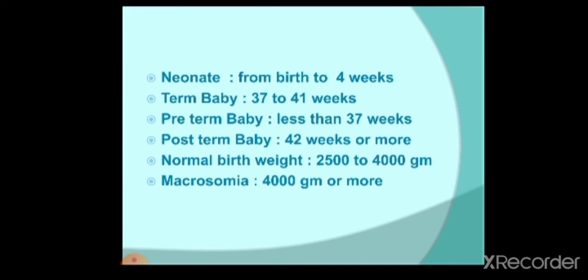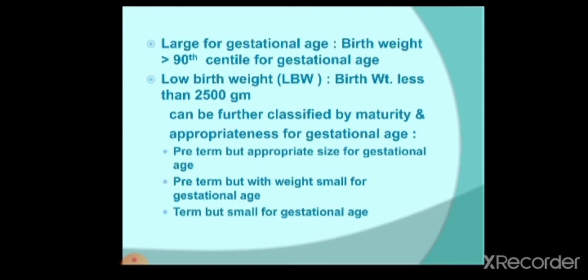The normal birth weight is 2.5 kilos to 4 kilos. Macrosomia means a neonate whose weight is more than 4 kilos. We also call this large for gestational age, which means the birth weight is more than the 90th centile.